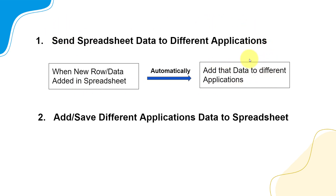With this use case, you can create a lot of automations, because that target application can be replaced with any of the applications available inside Pabbly Connect.